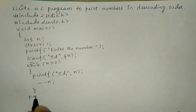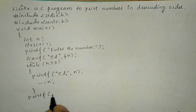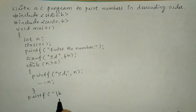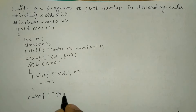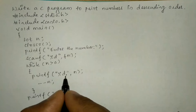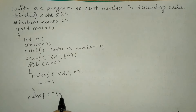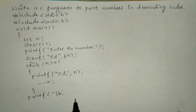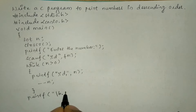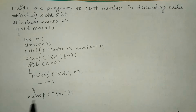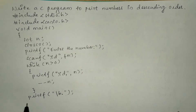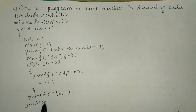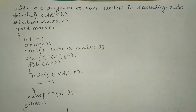Now I'm going to write one more printf statement and here in double quotation marks I'm going to use one of the escape sequences called backward slash b, that is backspace. So it is going to remove the comma at the end of the last iteration and put a full stop over here. I'm going to write full stop, end the double quotation mark, and put semicolon. Here I'll write the getch function and then the curly closing brace.